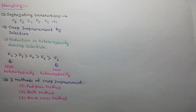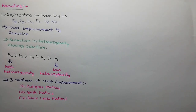There are 3 methods of selection in segregating generations of F1 hybrid: pedigree method, bulk method, and back cross method.